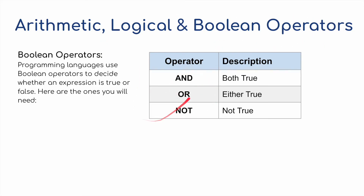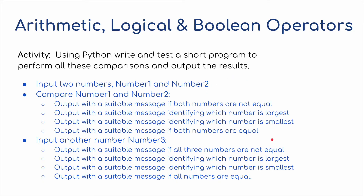Finally, we've got boolean operators, which you may be familiar with from the logic chapter: AND, OR, and NOT. Programming languages use boolean operators to decide whether an expression is true or false. AND means both are true; OR means either one is true; NOT means none of them are true. I've got another activity in Python to show how some of these work.